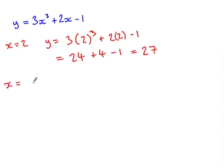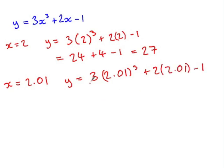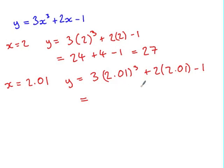And when x is 2.01, y is 3 lots of 2.01 cubed, plus 2 lots of 2.01, take 1. This is getting quite tricky now without a calculator. But if you enter it into a calculator, you'll find that the result is 27.381803.